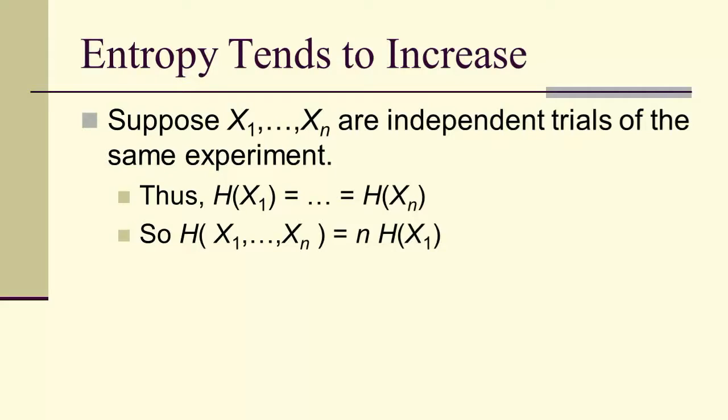And therefore, we would have an upper bound of n·H(X_1) for the joint entropy.